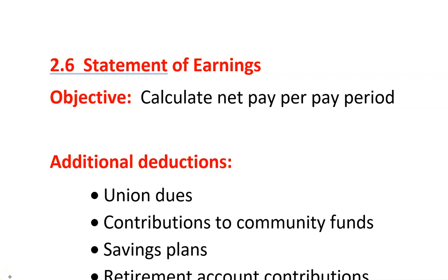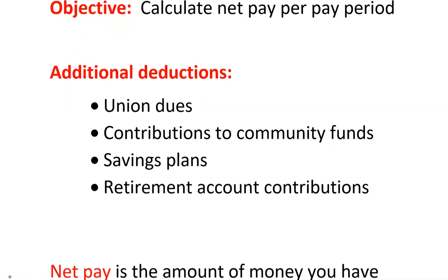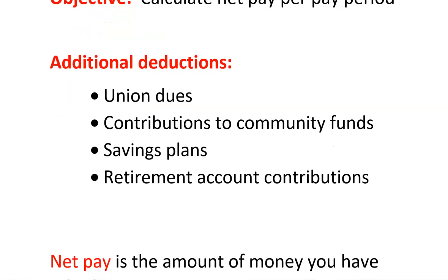Section 2.6, Statement of Earnings. Our objective for today is to calculate the net pay per pay period. Net pay is what you get to take home once all your taxes have been taken out. Today they're going to give us a few more examples of what additional taxes might be taken out, and then you actually have to figure out that net pay. It's kind of a combination of what we've been doing this whole Chapter 2.